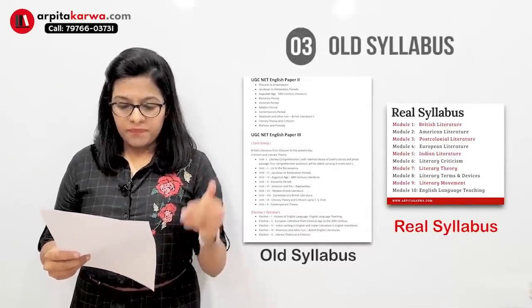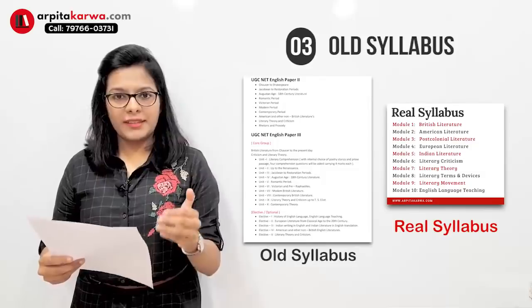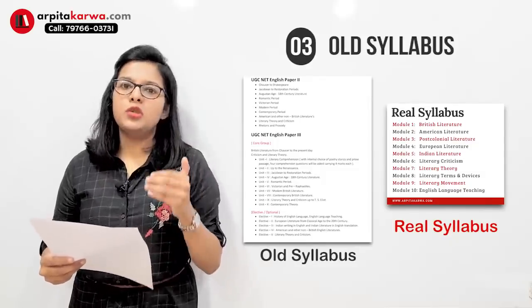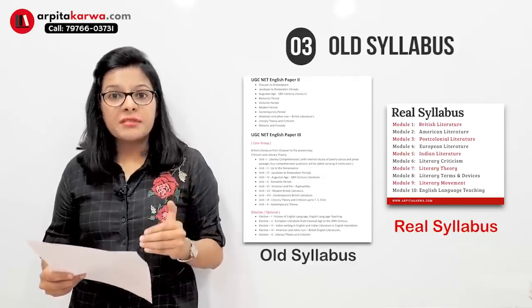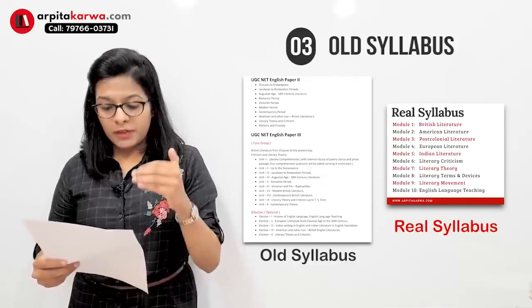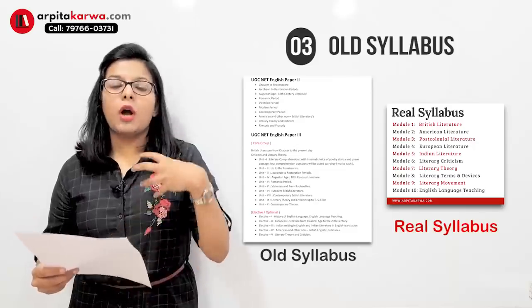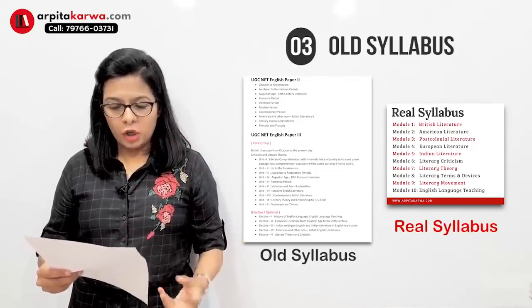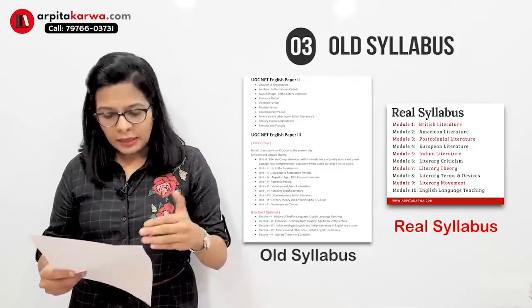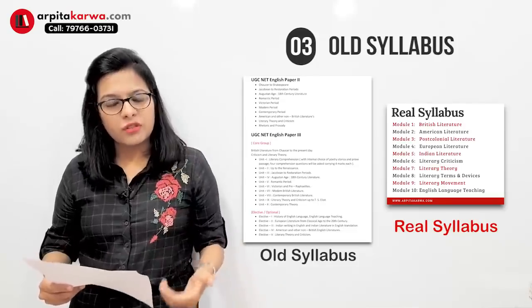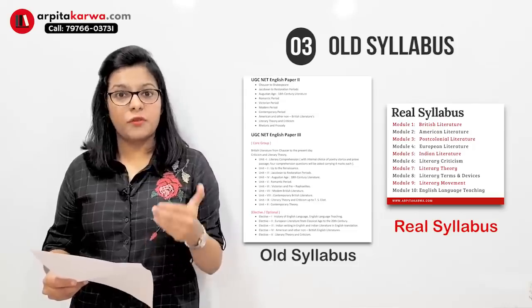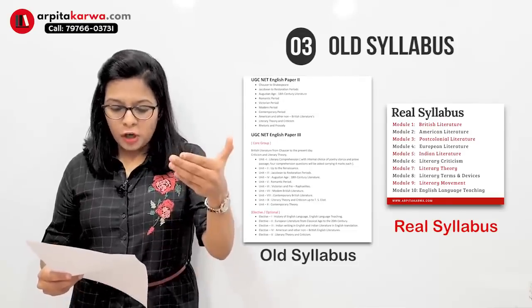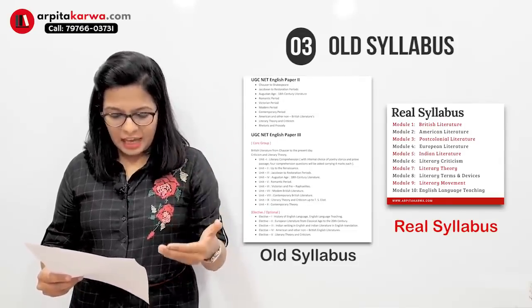Now in front of me I have the old syllabus. If you look at the old syllabus, you'll find they have divided it into two categories: paper two and paper three, which have various things in common. Why? Because paper three was written according to the descriptive pattern — the topics were the same, yet in paper three descriptive questions were asked and in paper two objective questions were asked from the same topics.